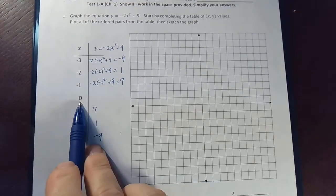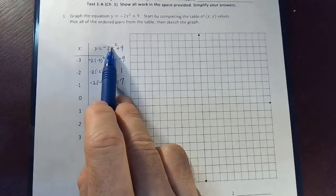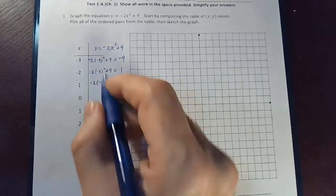And then if I plug in a 0, this one should be easy. If x is a 0, that whole term goes away, and the y would just be a 9.